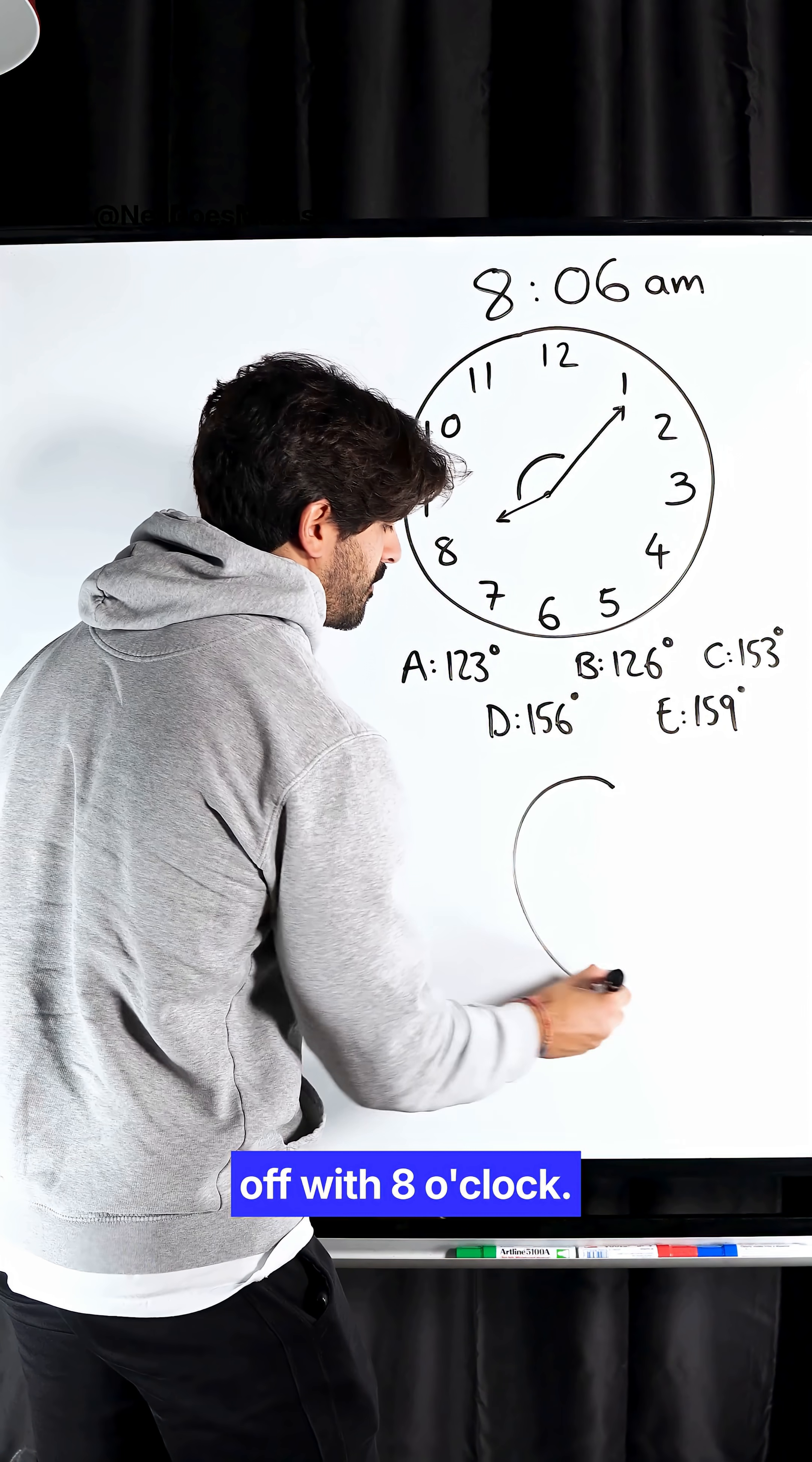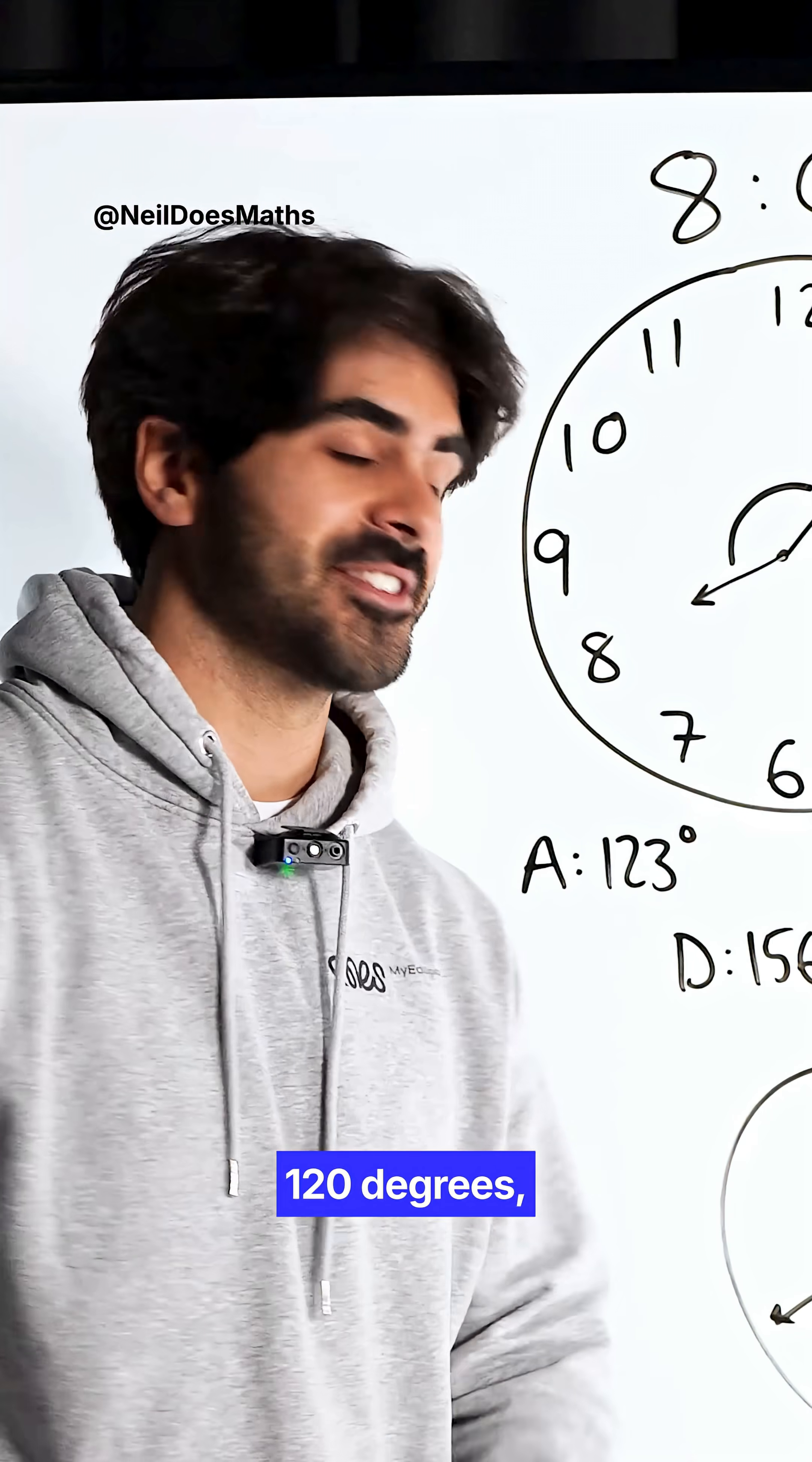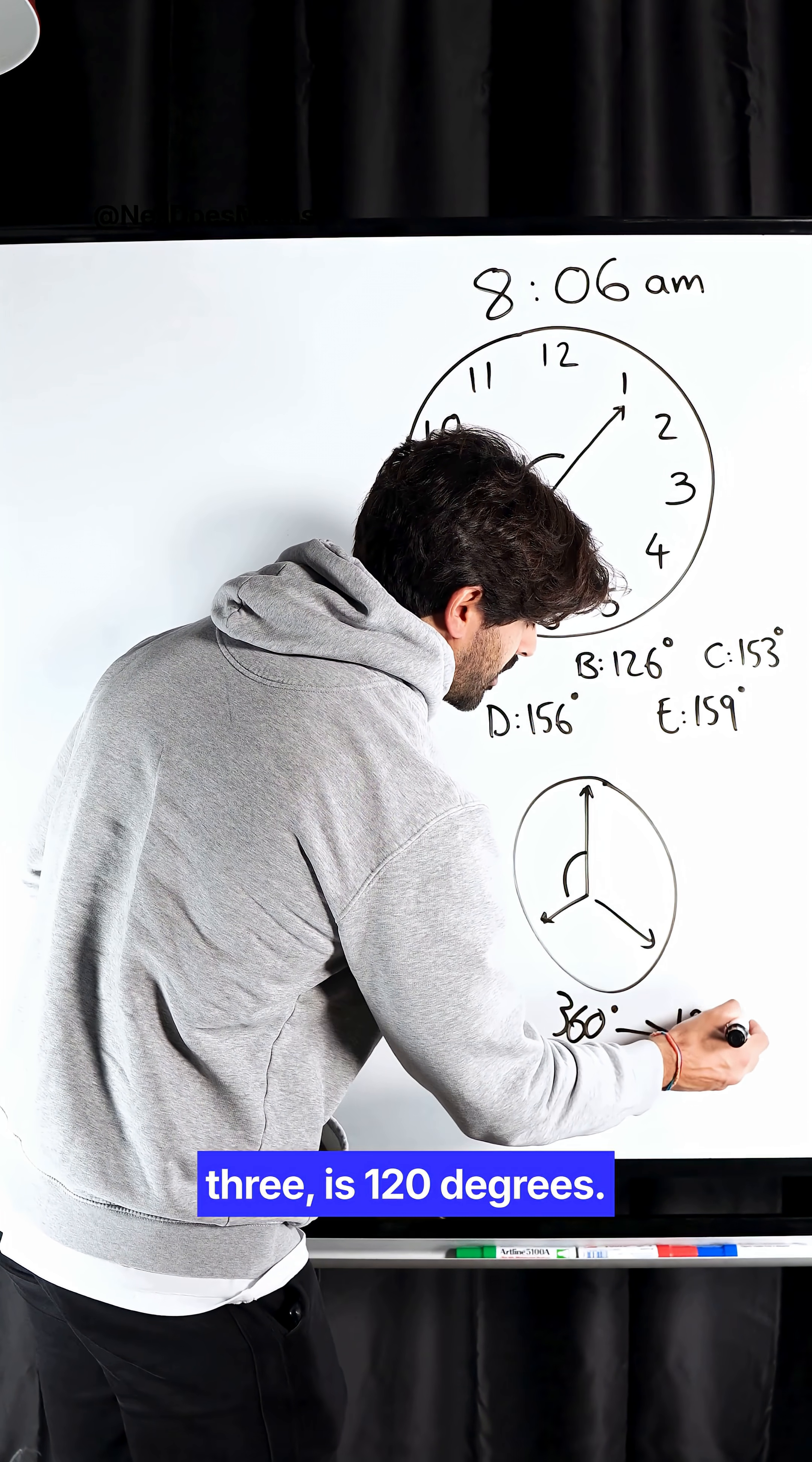Firstly, this starts with 8 o'clock. 8 o'clock would look like this. If we look at the obtuse angle there, it would be 120 degrees because it's one-third of a full circle. A full circle is 360 degrees, which when we divide by 3 is 120 degrees.